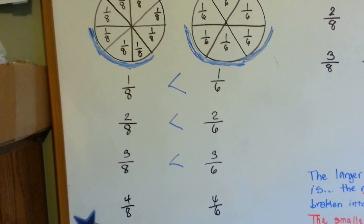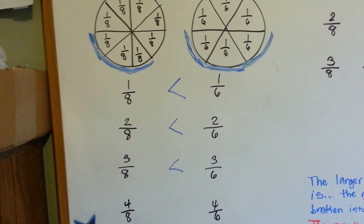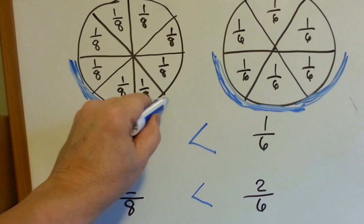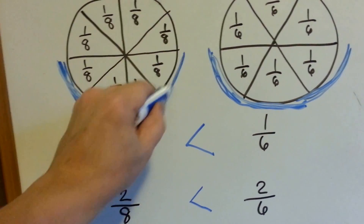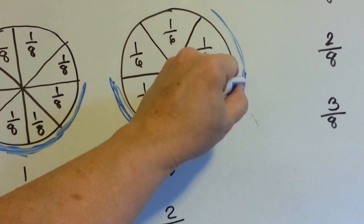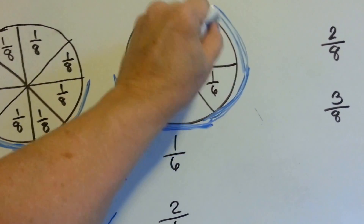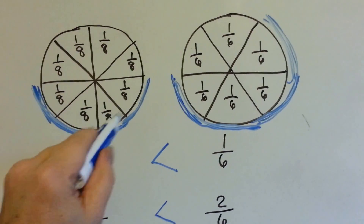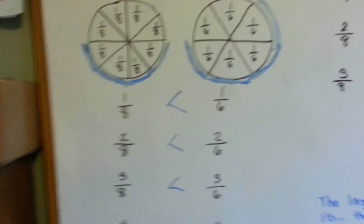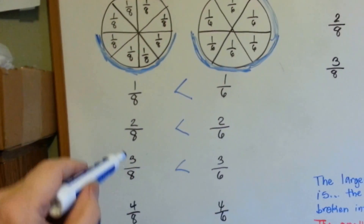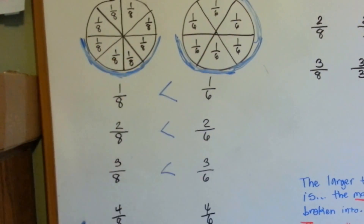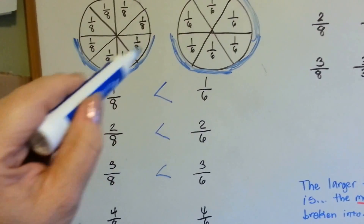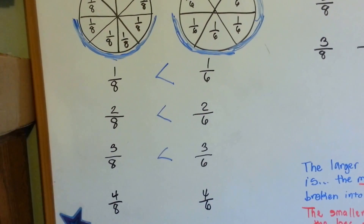Which one's bigger now — 4 eighths or 4 sixths? Let's add another eighth. Let's add another sixth. 1, 2, 3, 4 sixths. 1, 2, 3, 4 eighths. Which one's bigger? This one's still bigger. 4 sixths is more than 4 eighths.